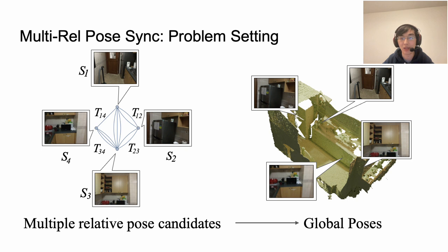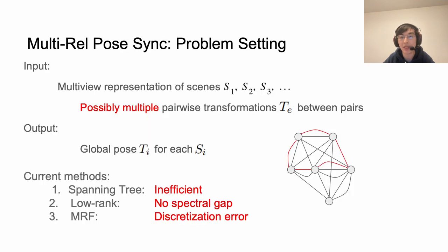That can help us recover the underlying 3D structure. In this work we propose a propagation clustering method that can handle the high noise ratio for multiple input poses between each pair. The synchronization problem is usually defined on a pose graph where the vertices are observations and the edges are input pairwise transformations. The output will be a global pose on each vertex.